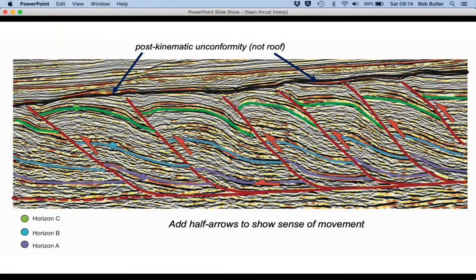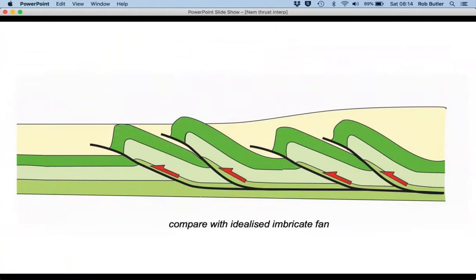So let's compare the thrust system here with an idealized imbricate fan. So in this idealized model, again we've got a series of thrusts that climb off a common detachment or floor thrust.